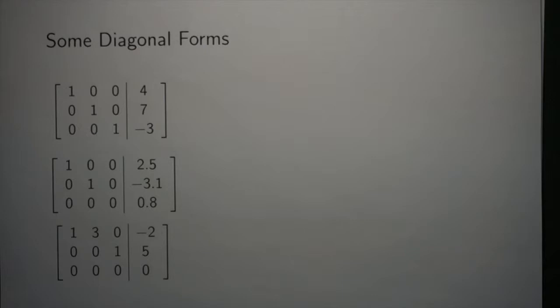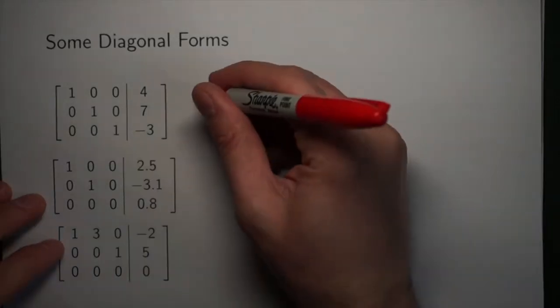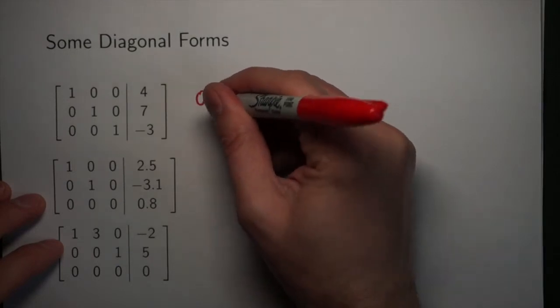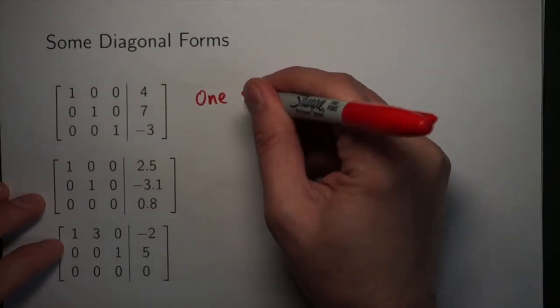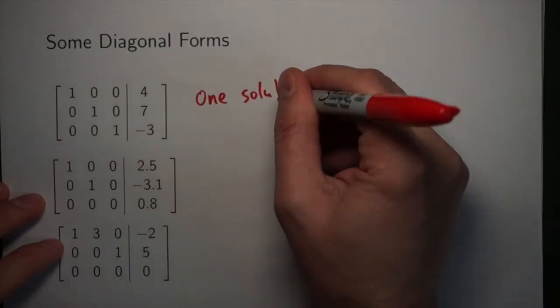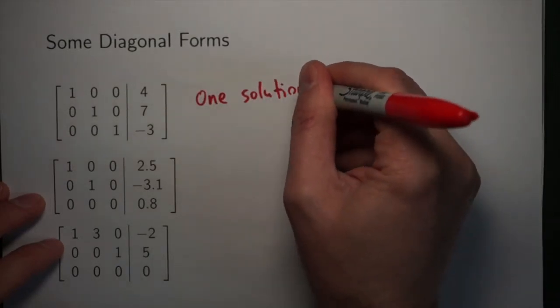After going through Gauss-Jordan elimination, what you're going to find is a diagonal form, and the diagonal form can look different depending on how the elimination works. If you look at these three different examples here, these are the three different ways diagonal form can turn out.